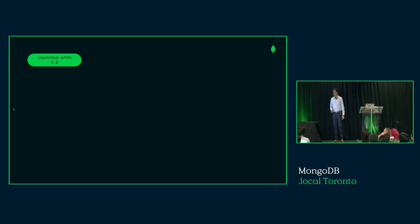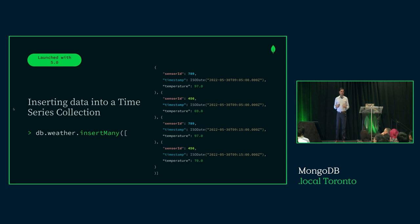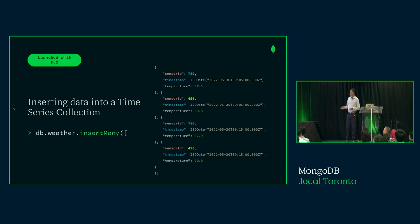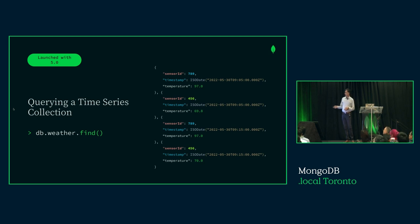When working with time series data, the developer experience is unchanged. When data comes in, you're inserting individual documents just like a simple document — sensor ID 789, temperature 97, and so on. From a developer perspective, it's the same JSON-based documents. You use insertMany to insert multiple documents into the collection. When retrieving data with a find query and filters, you get back all your readings as individual documents. There's nothing new in terms of how you interact with MongoDB.